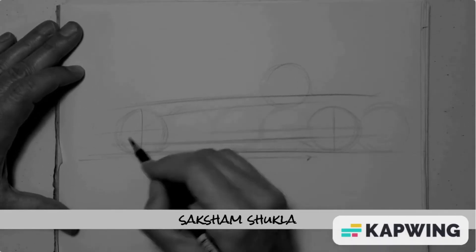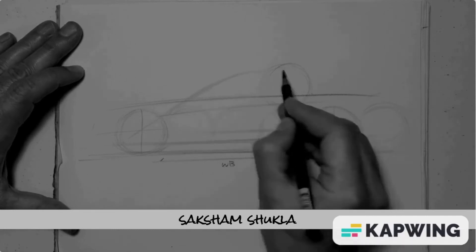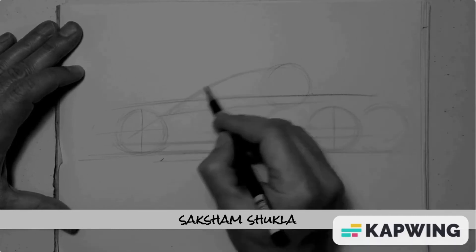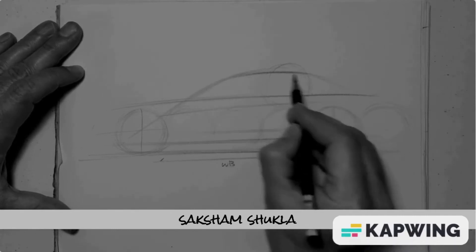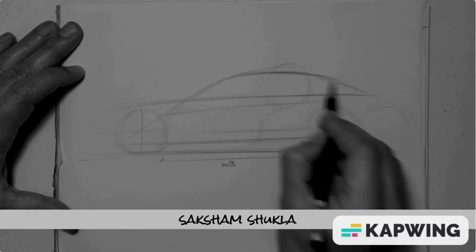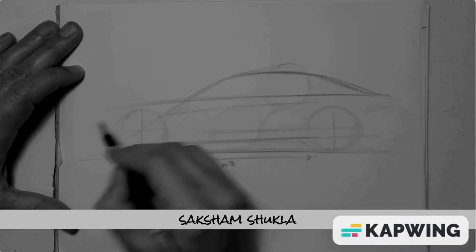Now the cabin — the A-pillar, the windscreen — is typically aligned with the center of the front wheel in a rear-wheel-drive sedan.